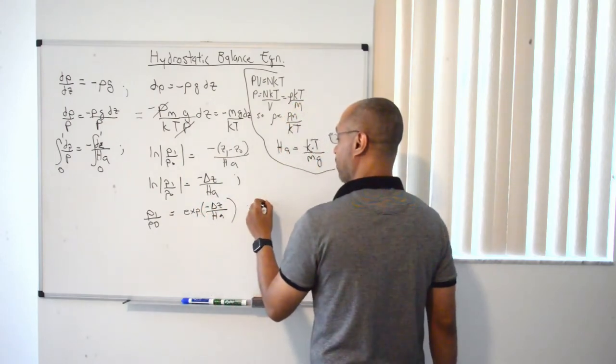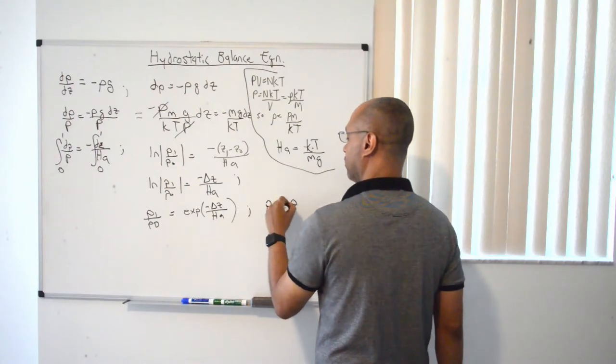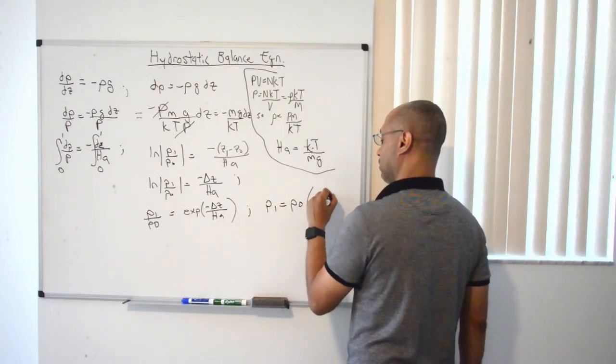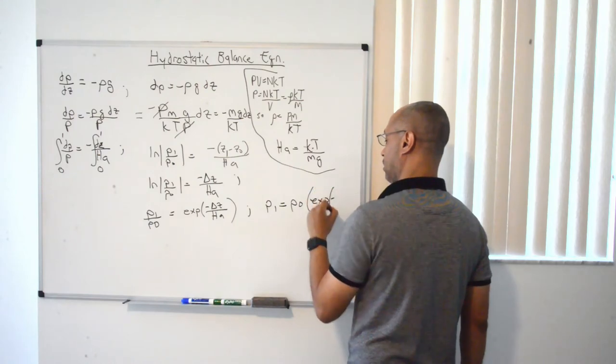And then we're there, basically. P1 is equal to p0 exponential of negative Δz over hA.